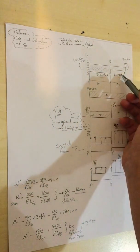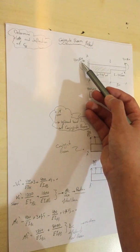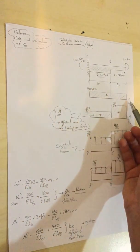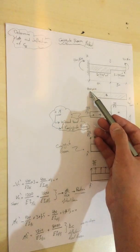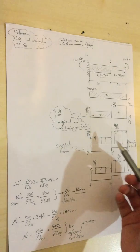First we'll find the reaction for the real beam. We only have this moment of 400, and we'll draw the moment diagram which is 400 acting upward in positive sign.